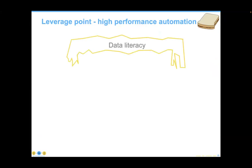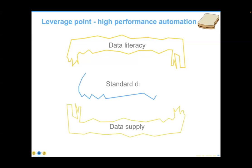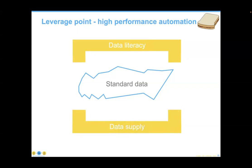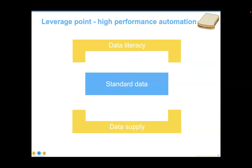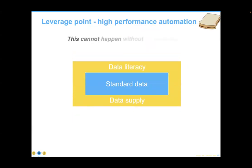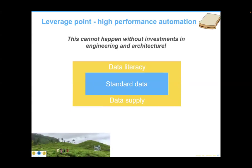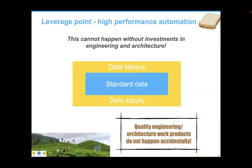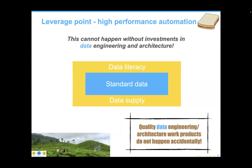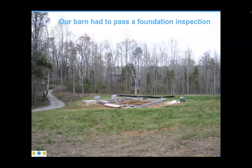This all combines into what I call the data sandwich metaphor: high-point automation is critical for most organizations, and we have varying amounts of data literacy and data supply. If we can help smooth these out and make data literacy and data supply complement the standard data, we can get them to work in conjunction much better. I had to go all the way to India to find a Deming quote hung over the cash register at a tea farm: 'Quality, engineering, and architecture work products do not happen accidentally.' And of course if we add the word 'data' to all of these, it's equally true.